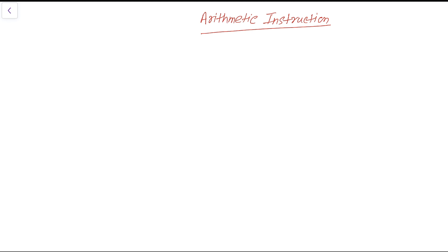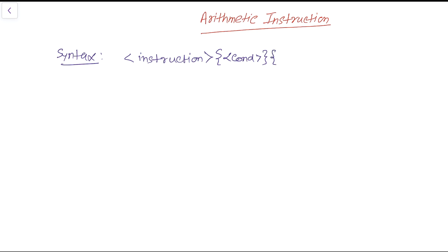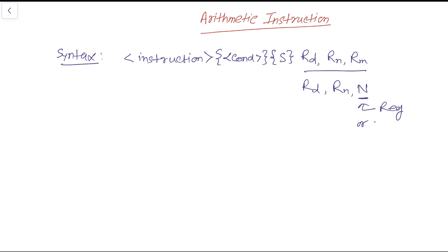The syntax of this type of instruction is as follows. Each instruction can have an optional condition code and an optional suffix S, then a destination register, and after that two source registers. This can also be written as RD, RN, and N, where N could be a register or an immediate value.